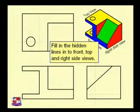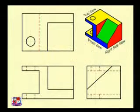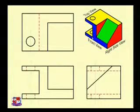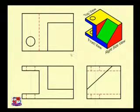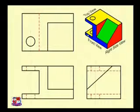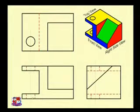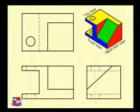Now fill in the hidden lines into front, top, and right side views. If you look from the top side, this inner edge, this edge, and this edge will not be visible — hence they are shown by dotted lines. Similarly, if we look from the front side, this circular hole drilled in the upper face and the lower face will not be visible, so it is indicated by dotted lines. We project the endpoints of the circle from here to here, and those dotted lines represent the circular hole.